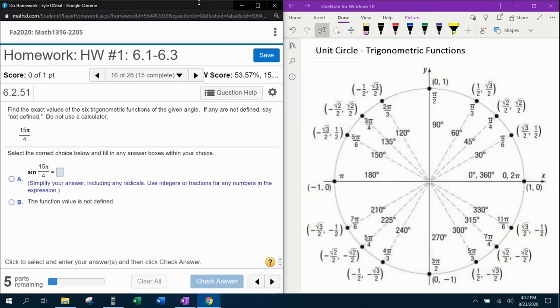Question number 16 from our 1316, homework number one in MyLabMath. They want us to find the exact value of the six trigonometric functions of the given angle. So the first thing we're going to have to figure out is where 15π over 4 is in the unit circle. Because 15π over 4 is not listed here, we're going to have to find it.